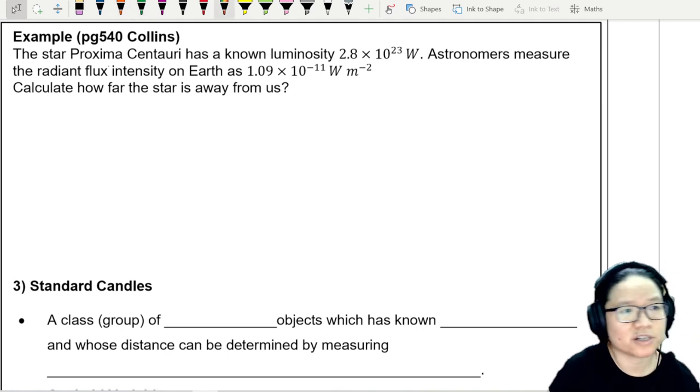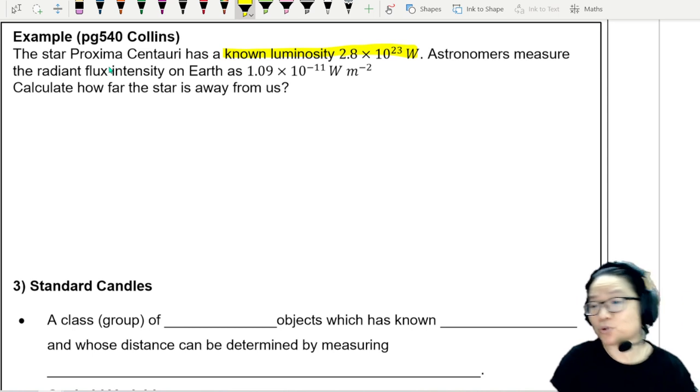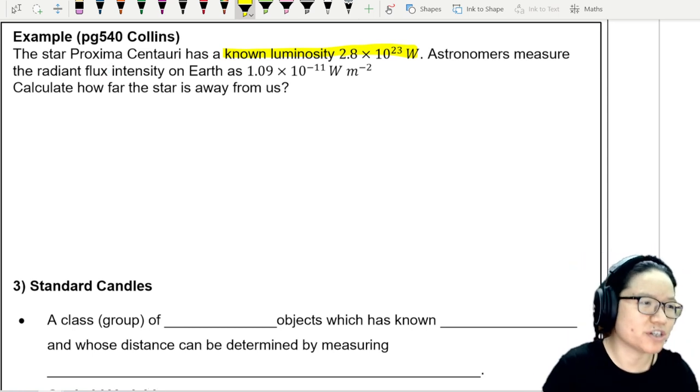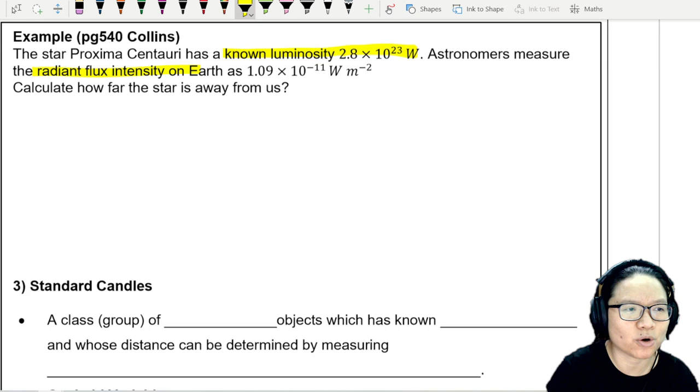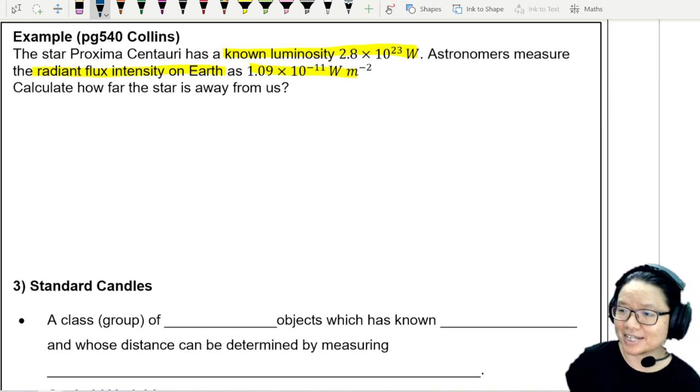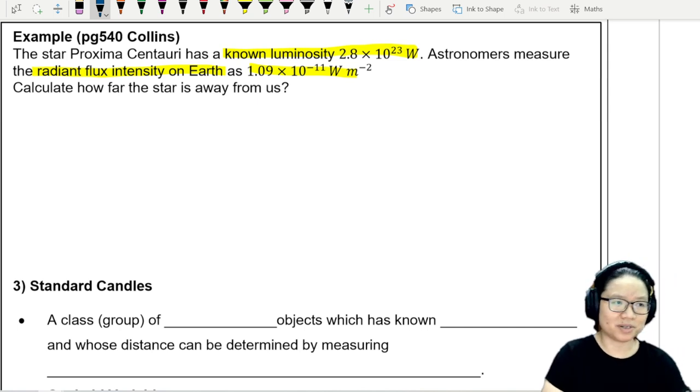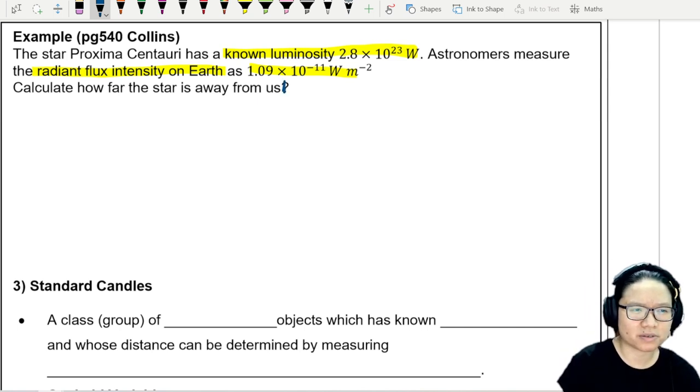Let's jump into an example. The star Proxima Centauri has a known luminosity of 2.8 × 10²³ watt. Astronomers measure the radiant flux intensity on Earth as 1.09 × 10⁻¹¹ watt per meter squared. So meaning by the time it reaches Earth, a lot of that intensity has dropped to 10 to the power of negative 11 watt. Calculate how far the star is away from Earth.